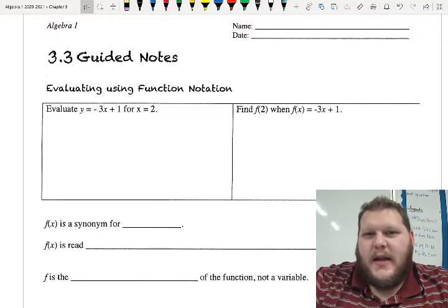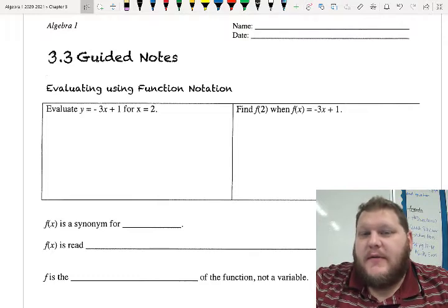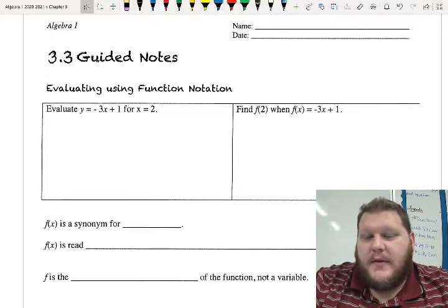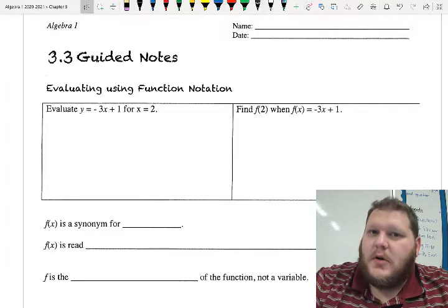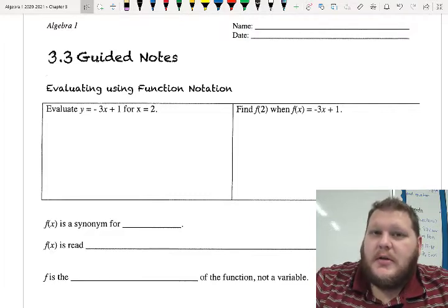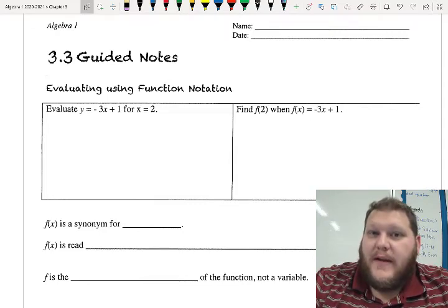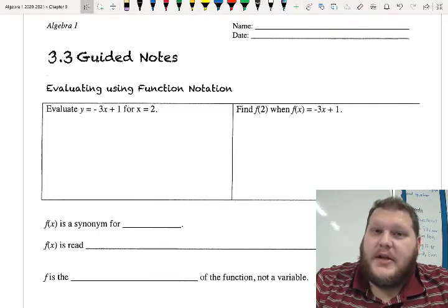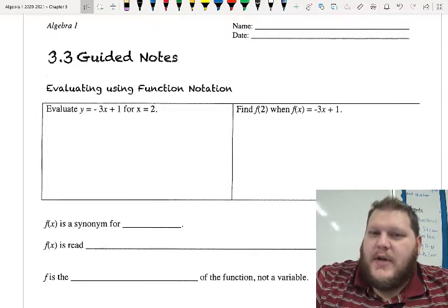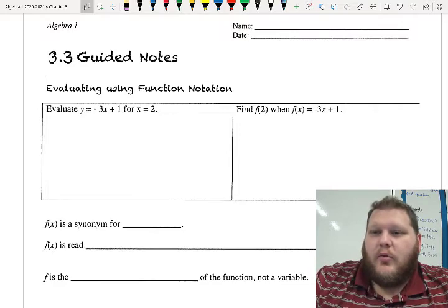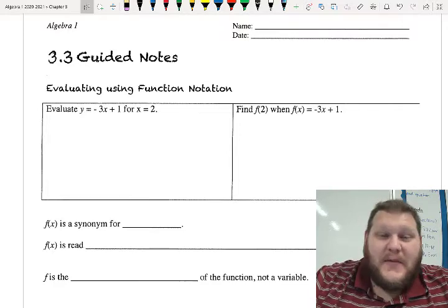Hey guys, today we are looking at 3.3, which is all about something called function notation. Obviously, we've been talking about functions throughout this chapter so far. We identified when something is a function or it's not a function. We know we call it a relation. Yesterday, we looked at when a function or when a relation is linear versus when it's nonlinear. So today, kind of diving a little bit deeper into some notation, some different ways that we can write functions and then actually getting to evaluating some functions as well.